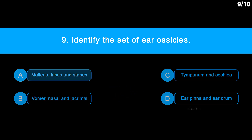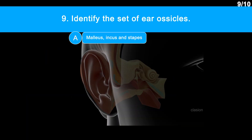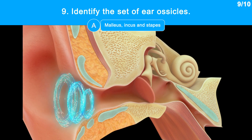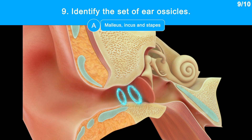The correct answer is Option A: Malleus, Incus and Stapes. Malleus, Incus and Stapes are bony ear ossicles that connect the tympanic membrane to the inner ear, allowing for the transmission of sound waves. So these are also called auditory ossicles.